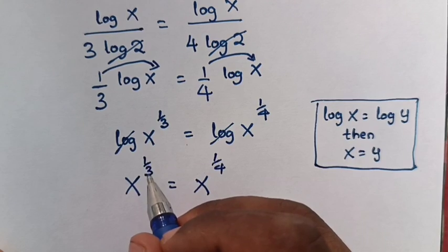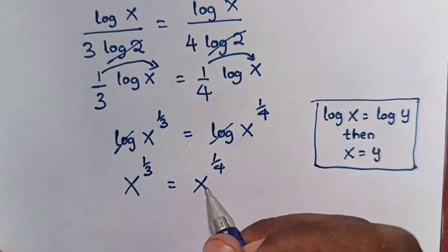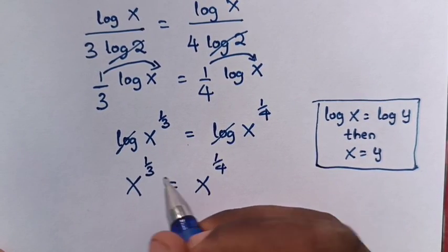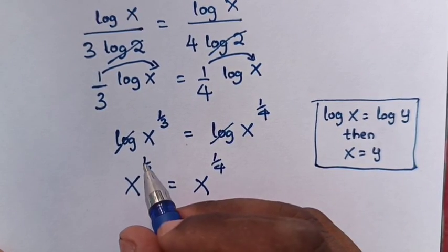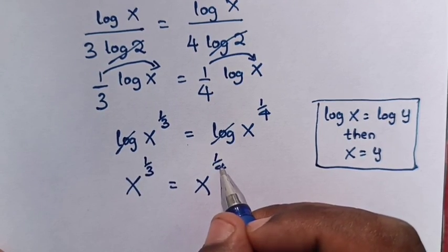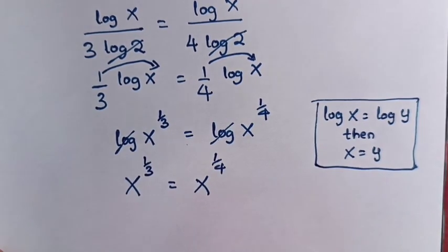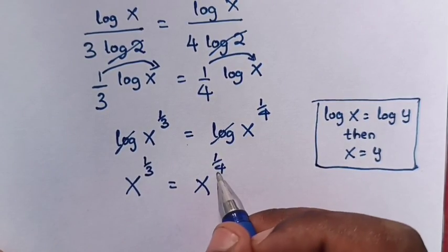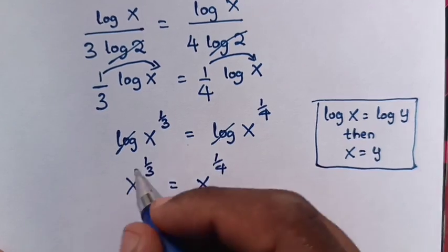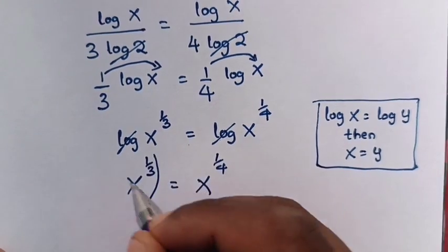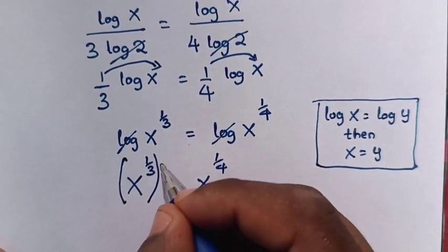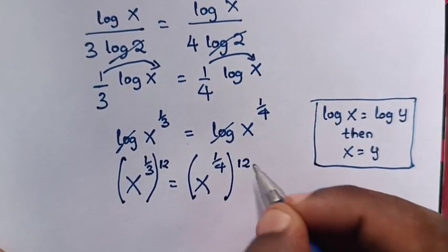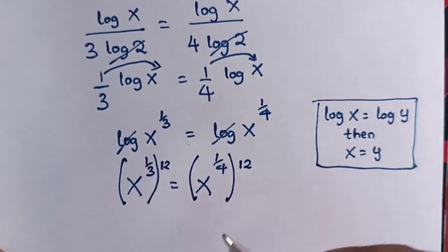So our equation will be x power 1 over 3 is equals to x power 1 over 4. Now from here, 1 over 3 and 1 over 4 — the common denominator of 3 and 4, which is the LCM of 3 and 4, is 12.